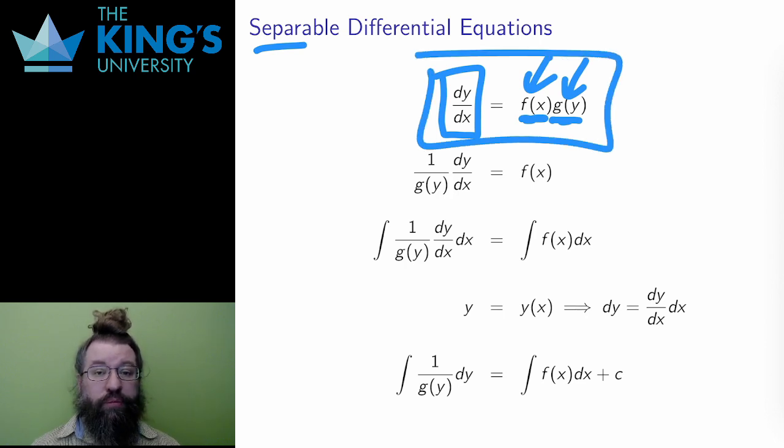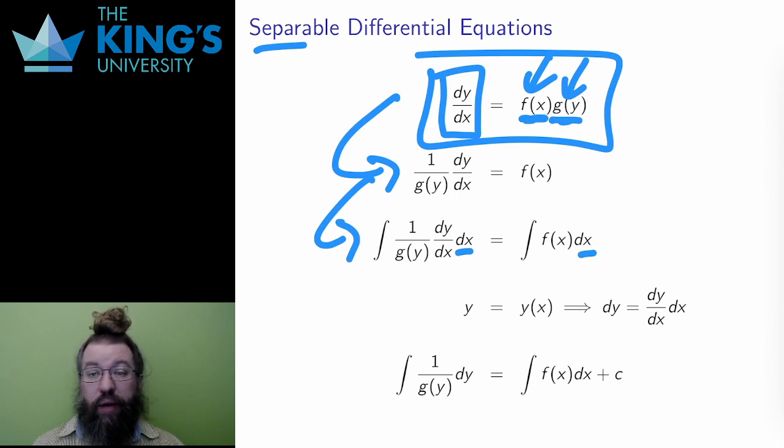How do I solve them? Here is the general idea. I can divide both sides by g(y), the expression in the dependent variable y. That moves g(y) to the left in the denominator. Then I can integrate both sides in the independent variable x. The right is an ordinary integral, the integral in x of f(x).